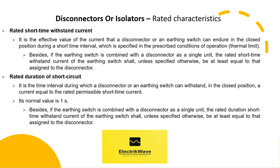The Rated Duration of Short Circuit is the time interval during which a Disconnector or Earthing Switch can withstand, in the closed position, a current equal to the rated permissible short-time current. Its normal value is 1 second. If the Earthing Switch is combined with a Disconnector as a single unit, the rated duration of short-time withstand current of the Earthing Switch shall, unless specified otherwise, be at least equal to that assigned to the Disconnector.